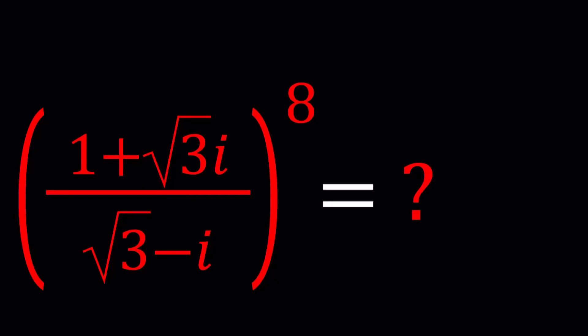Hello everyone, welcome to a plus bi. This channel is all about complex numbers, and in this video we're going to be simplifying a complex rational expression. We have (1 + √3i) divided by (√3 - i) to the 8th power, and we're going to be simplifying this expression.